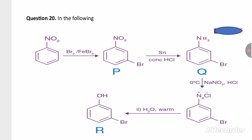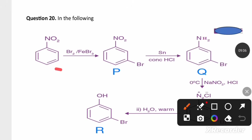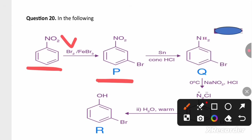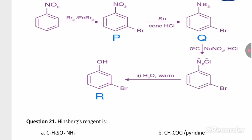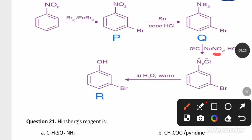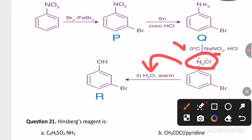The next question shows a reaction sequence: nitrobenzene on bromination gives meta-bromonitrobenzene. This on treating with tin in the presence of concentrated HCl reduces the nitro group to give an amine (Q). That amine on treating with NaNO2 and HCl at 0–5°C undergoes diazotization to produce a diazonium salt. This diazonium salt on hydrolysis converts to an alcohol group, giving product R.